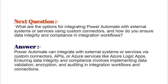Next question: What are the options for integrating Power Automate with external systems or services using custom connectors, and how do you ensure data integrity and compliance in integration workflows? Power Automate can integrate with external systems or services via custom connectors, APIs, or Azure services like Azure Logic Apps. Ensuring data integrity and compliance involves implementing data validation, encryption, and auditing in integration workflows and connections.